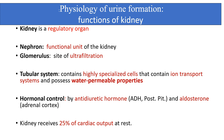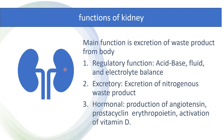Before we jump to diuretic drugs, we should know about the physiology of urine formation and function of the kidney. The kidney is a regulatory organ; nephrons are the functional unit of the kidney. The glomerulus is the site of ultrafiltration. The tubular system contains highly specialized cells with ion transport systems and water permeability properties. Hormones like anti-diuretic hormone and aldosterone control kidney function, and the kidney receives 25% of cardiac output at rest.